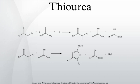Thiourea is a reagent in organic synthesis. Thioureas refers to a broad class of compounds with the general structure R3R4N-C=S. Thioureas are related to thioamides, for example RC(S)NR2, where R is methyl, ethyl, etc.